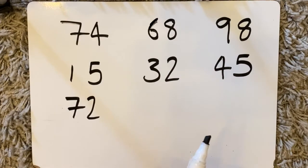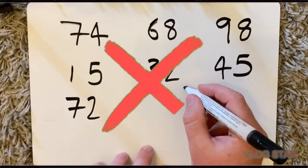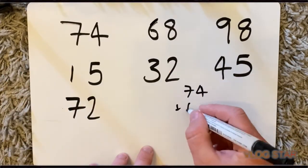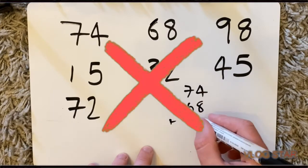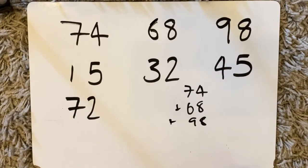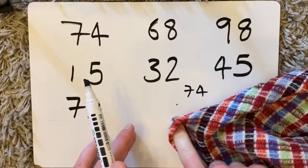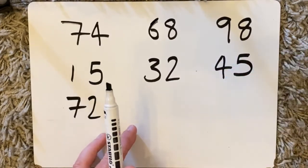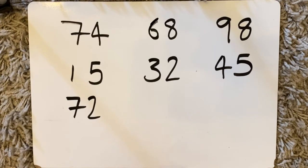Now if you did pause the video and you tried to work this out by going 74 plus 68 plus 98 and doing a huge massive column method, then I'm here to tell you that that is not the easiest way to do it, because there's loads of mistakes that can be made doing that.